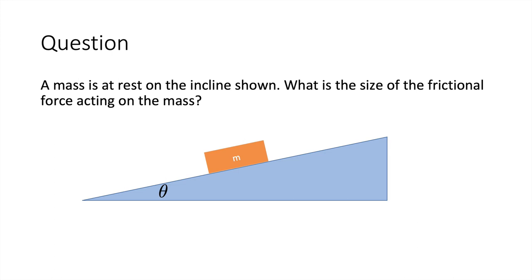Consider a mass at rest on an inclined plane. The weight force mg acts downward; the normal force is perpendicular to the plane. Breaking the weight into components: mg cos θ perpendicular and mg sin θ parallel to the plane. Since the net force parallel to the plane is zero (the mass is at rest), the frictional force must equal mg sin θ.